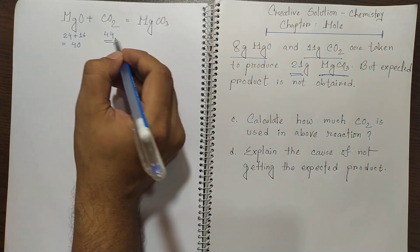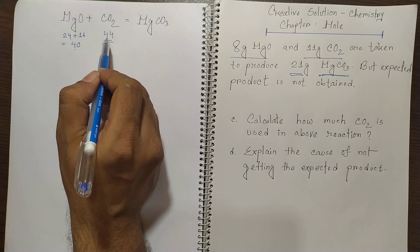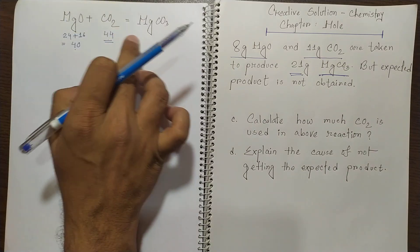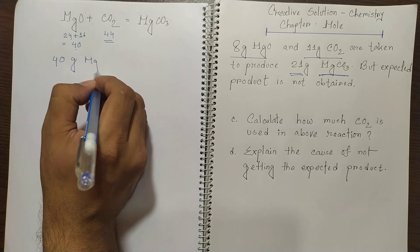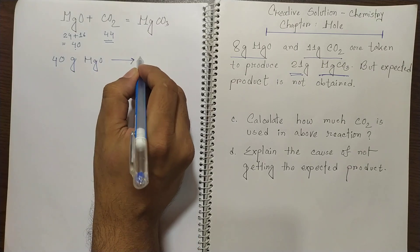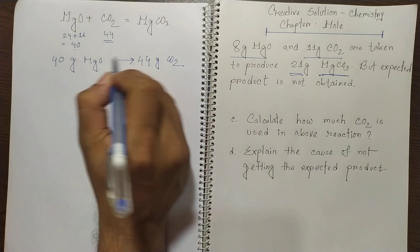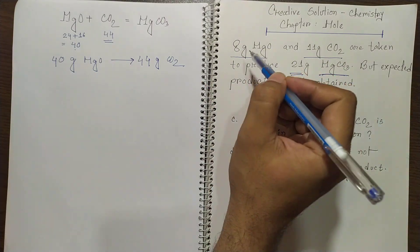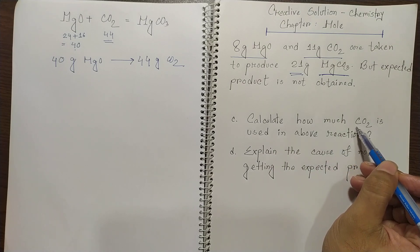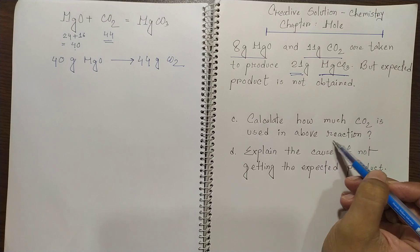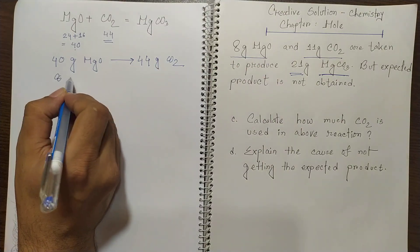From the balanced reaction we can see that 40 gram magnesium oxide reacts with 44 gram CO₂. So from 40 gram magnesium oxide, 44 gram carbon dioxide will be reacting. In this problem, 8 gram magnesium oxide is given, so we need to calculate the amount of carbon dioxide that is used in this reaction.